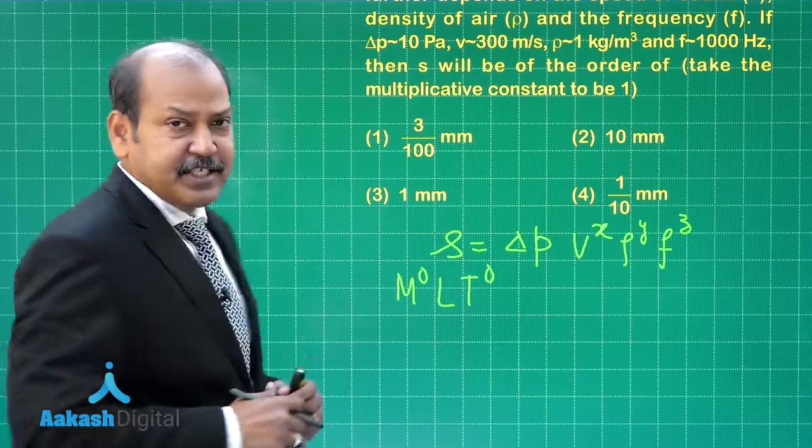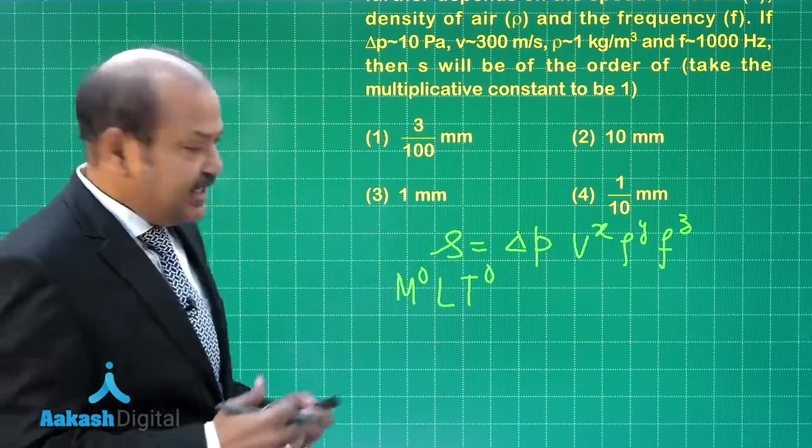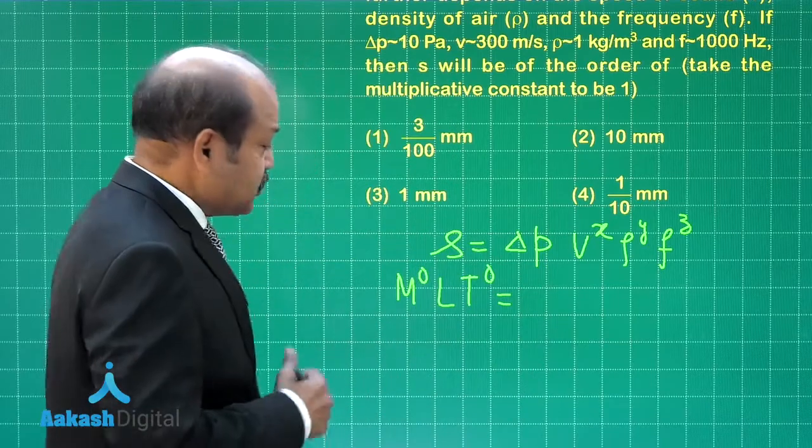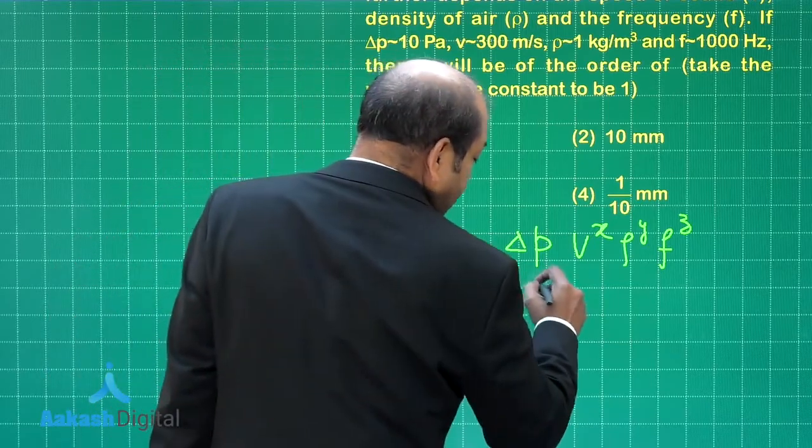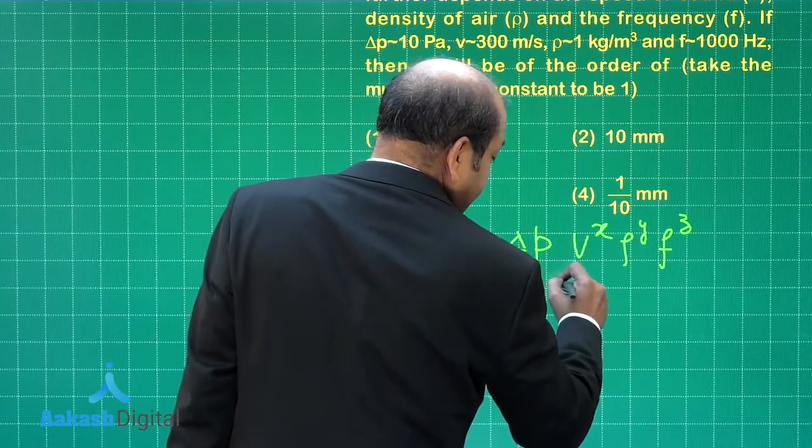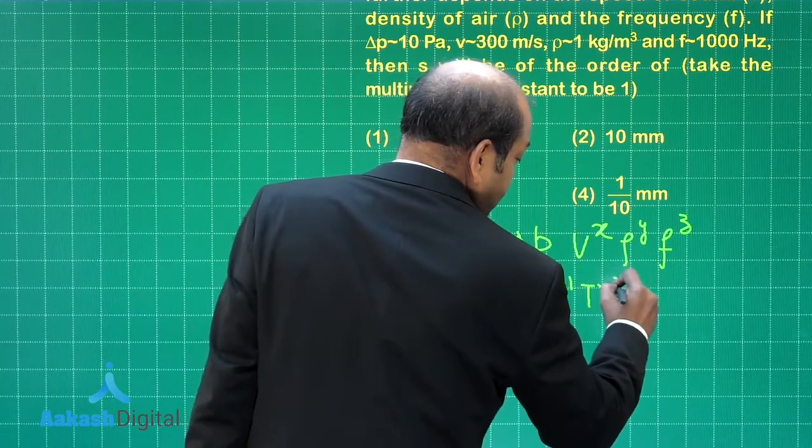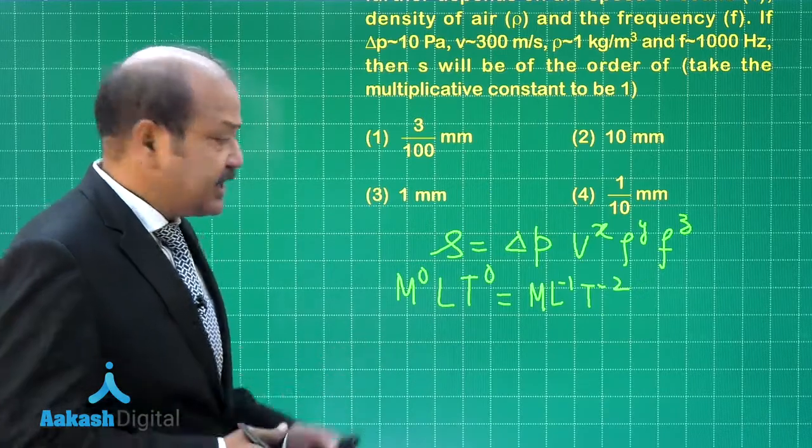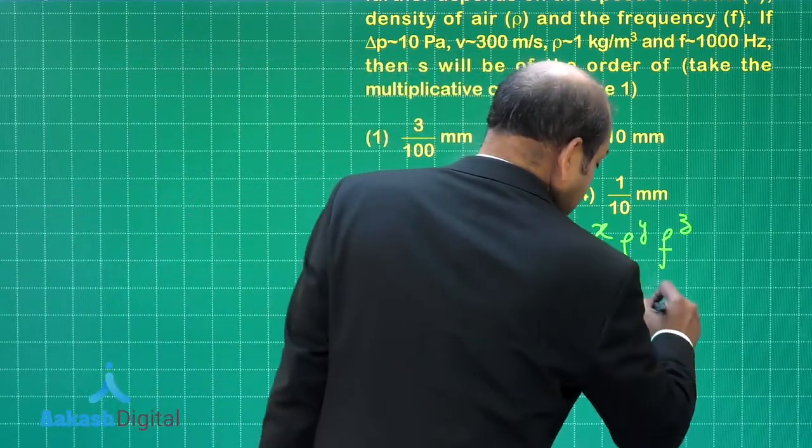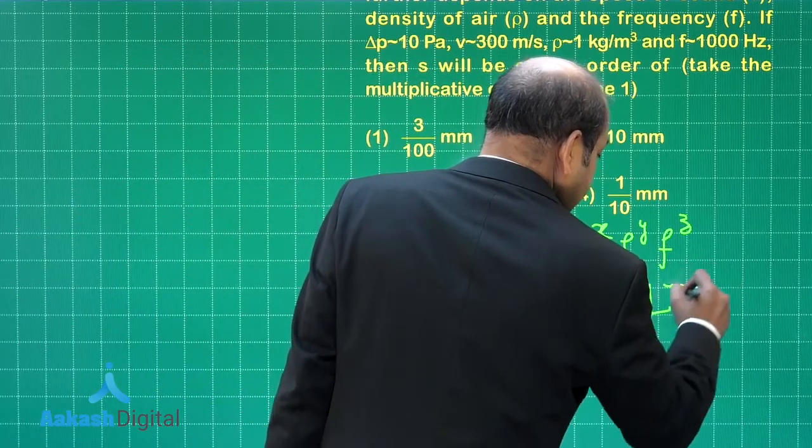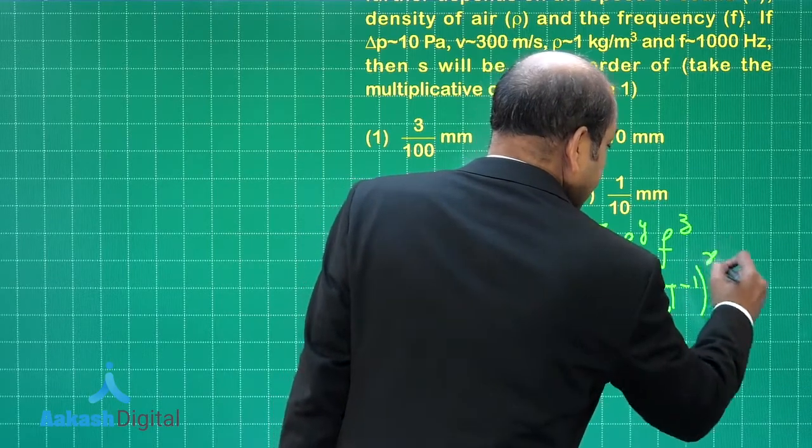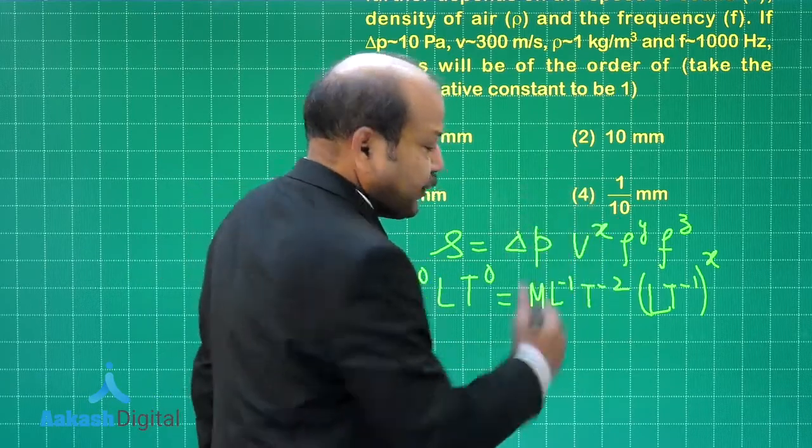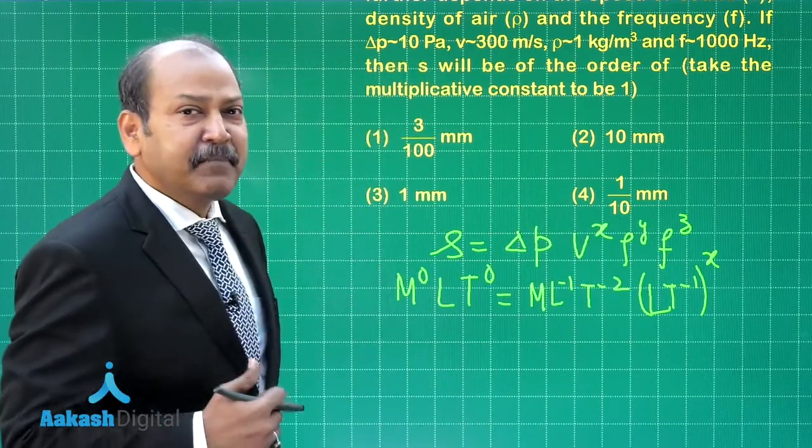On the right hand side, Δp of course you know is for pressure. So the dimensional formula for this is ml⁻¹t⁻² force per unit area. For velocity it is lt⁻¹ and of course we have to put the power of x and let us complete this. For ρ it is ml⁻³.